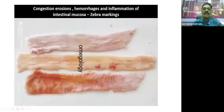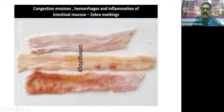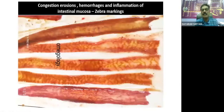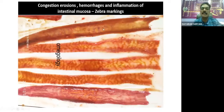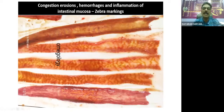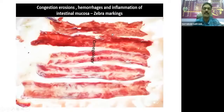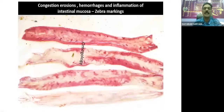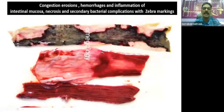Now, congestion, erosion, hemorrhage, and inflammation of the intestinal mucosa. In the early stage, we can see early congestion and early zebra markings on the mucosa of the intestines. As the pathogenesis becomes more prominent, we are getting more and more prominent lesions — the zebra markings become very pronounced in the intestinal mucosa. As the intensity of the infection increases, we are getting extensive lesions with eroded mucosa, zebra markings, and severe inflammatory reaction. Congestion, erosions, hemorrhage, and inflammation of intestinal mucosa with zebra markings are seen.